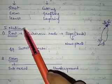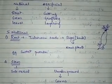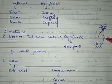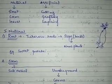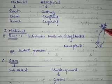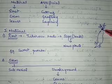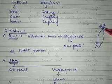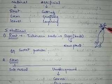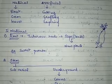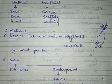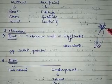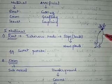Starting with the natural method, the first one is the root. Consider the tuberous root of the sweet potato — it is swollen as it stores food material. At the junction between the stem and the root, there are small buds present which are called slips. These slips will grow and form a new plant.